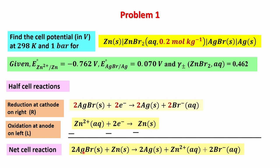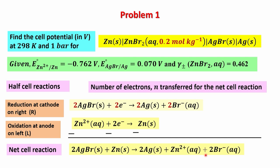The net cell reaction is obtained by subtracting the second equation from the first: 2 AgBr(s) + Zn(s) → 2 Ag(s) + Zn²⁺(aq) + 2 Br⁻(aq). This tells me that the number of electrons n transferred for the net cell reaction is 2, since I had to multiply the first half cell reaction by 2 to balance the electrons exchanged at both electrodes.